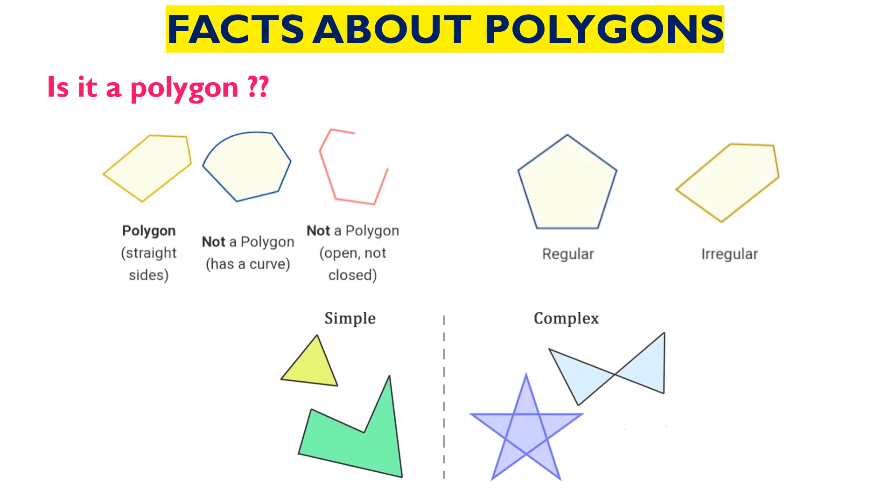Then we have simple and complex polygons. Simple polygons are made up of very simple lines. They don't cross each other. While the complex polygons, the lines are crossing each other. This kind of polygons are known as complex polygons.